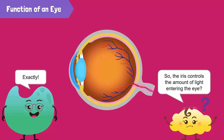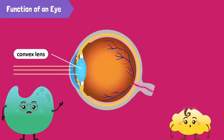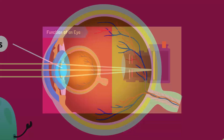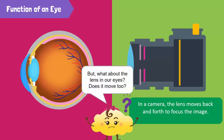Exactly! There is a convex lens in the eye, located behind the iris. This lens focuses the light rays that bounce off an object onto the back of the eye. In a camera, the lens moves back and forth to focus. But what about the lens in our eyes? Does it move too?